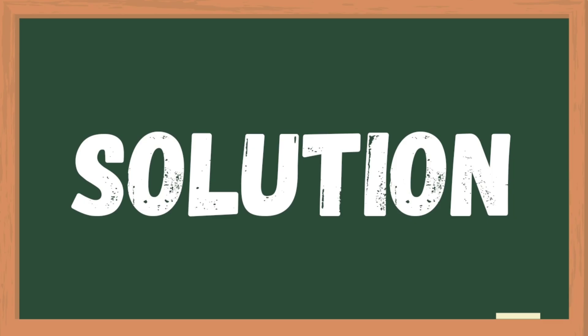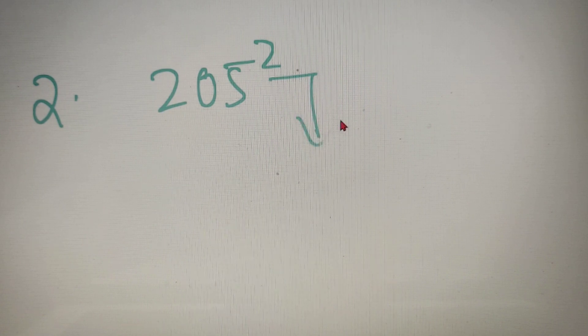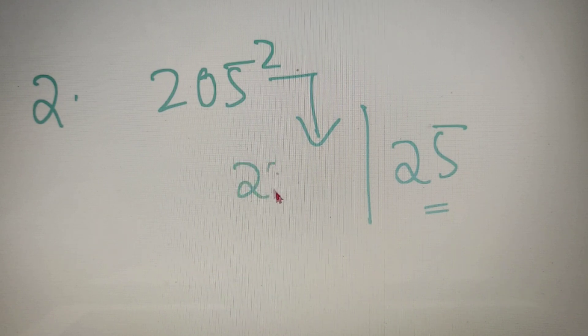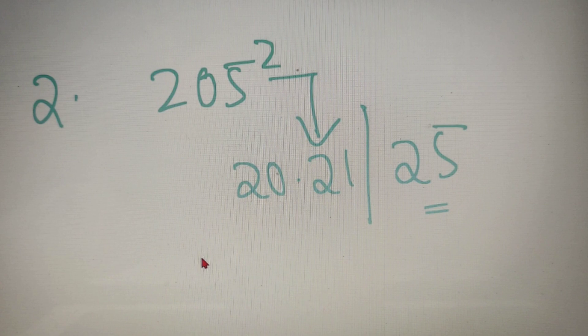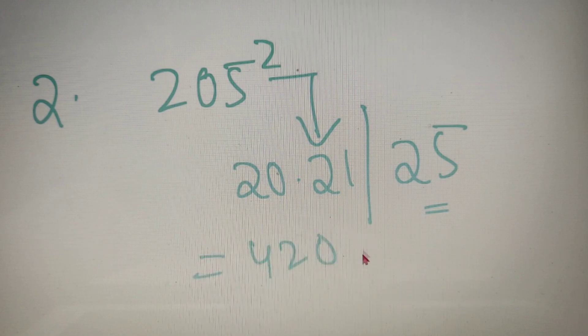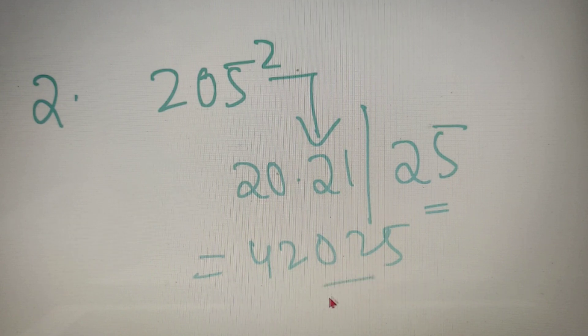For our second example, we have to calculate the square of the number 205. So we have to calculate 205 whole square. According to the method, we have to calculate our answer in two parts, the second part of which is always 25 and the first part is equal to 20 into 20 plus 1 which is equal to 21. So our final answer is equal to 42025. The square of the number 205 is equal to 42025.